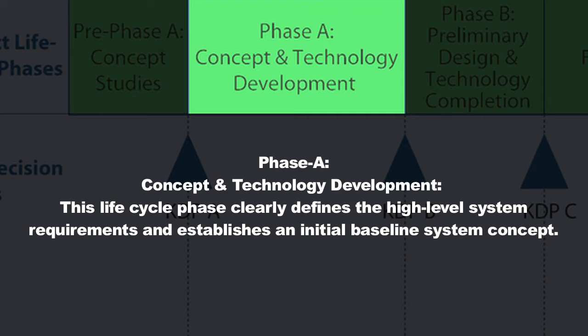We'll talk a lot more about requirements in other units, but what you're trying to do here is take these objectives and break them down into lower and lower levels of detail so that in the end you could provide specific information for the person who's going to go off and buy the propulsion tank or the battery for the spacecraft.